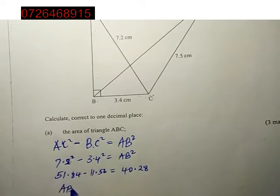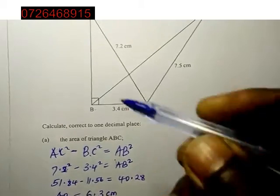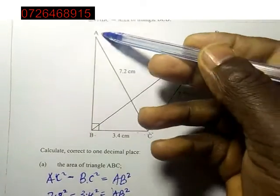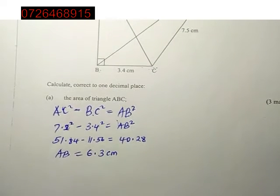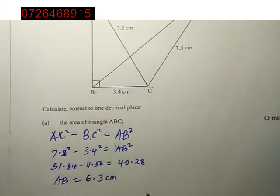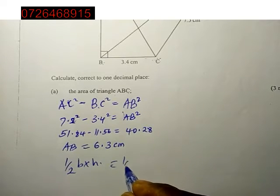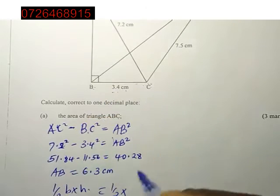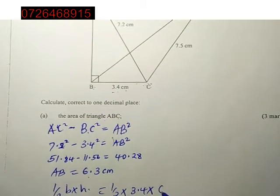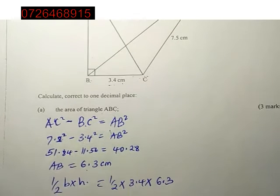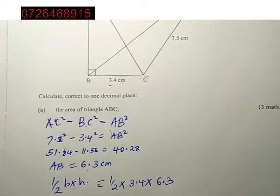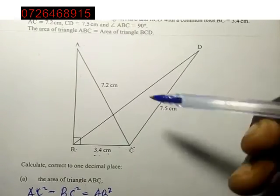But we want AB, so we find the square root and this gives us 6.3 to one decimal place. So our height AB is 6.3 centimeters. Now what do we do with that height? This height is going to give us the area of ABC. We know area of a triangle is half base times height. So we have half times the base 3.4 times the height 6.3. This gives 10.7 centimeters squared. So we've obtained the area of ABC.